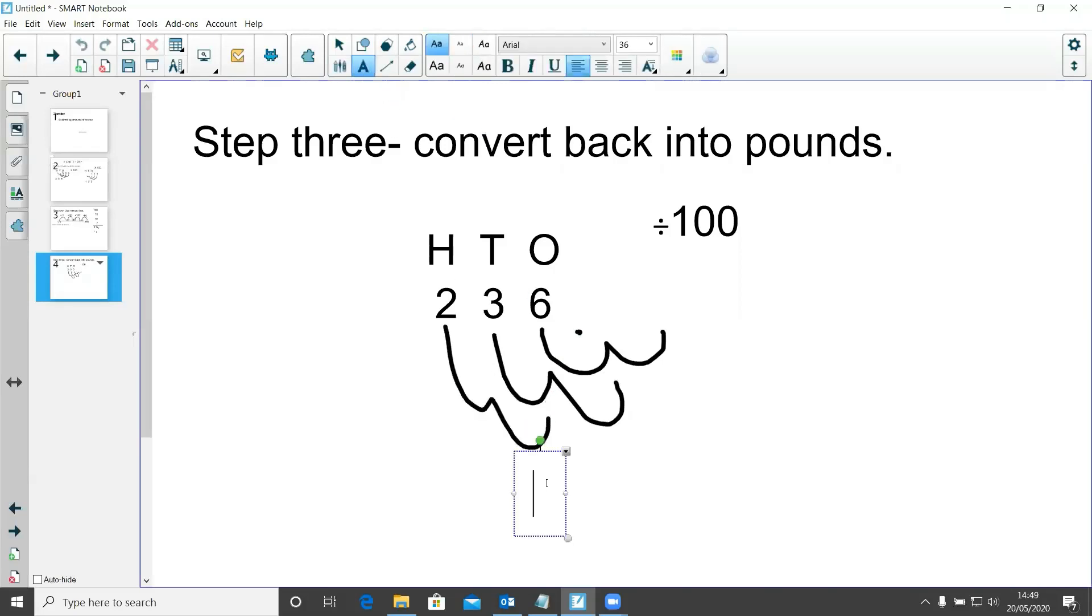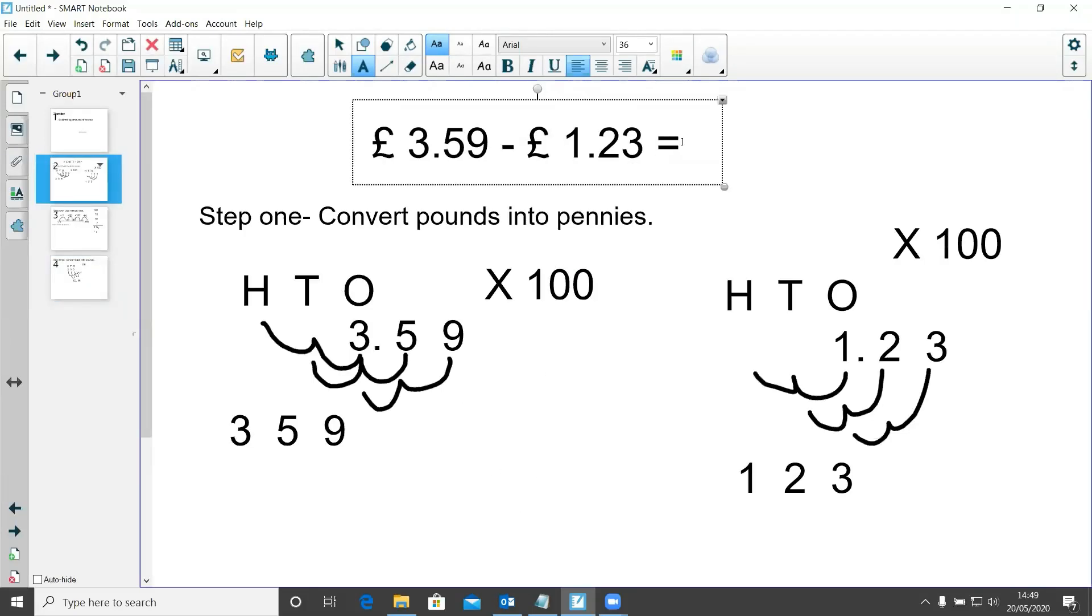So I now have 2, my decimal point, 3, 6, and then I mustn't forget to add in my pound sign because we are talking about money. So £3.59 take away £1.23 is £2.36.